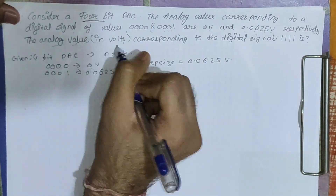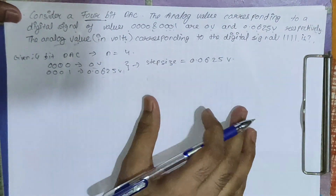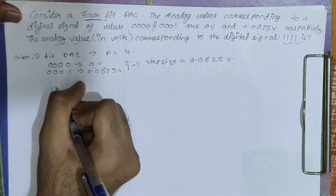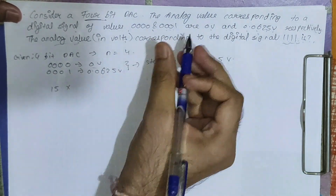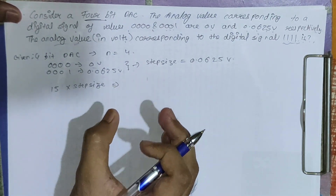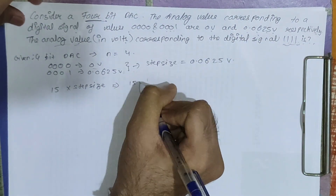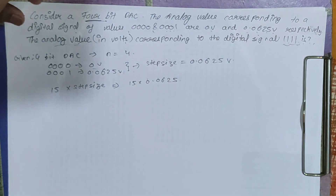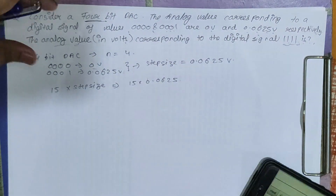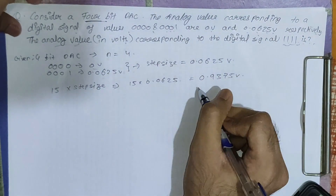We need to find the analog value corresponding to digital signal 1111. The basic method is to convert this binary number to decimal. The decimal value for 1111 is 15. So we multiply 15 by the step size: 15 multiplied by 0.0625 gives 0.9375V. So the analog value corresponding to digital input 1111 is 0.9375V.